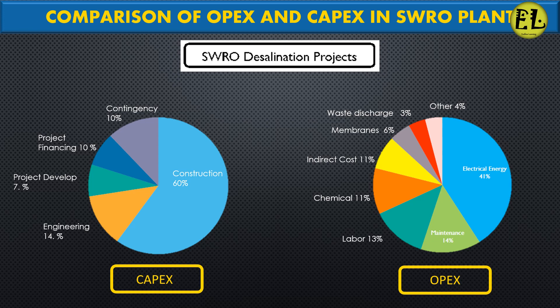Capex costs are the upfront costs associated with building and installing a SWRO desalination plant. These costs include the cost of equipment, engineering, construction, permitting, and site preparation. Opex costs are the ongoing costs associated with operating and maintaining a SWRO desalination plant.